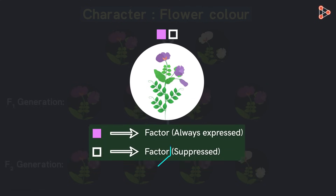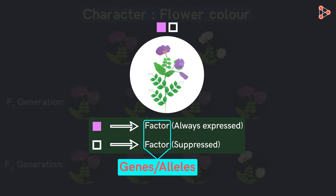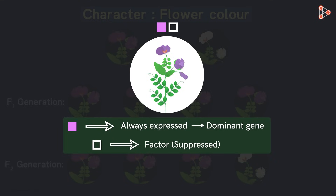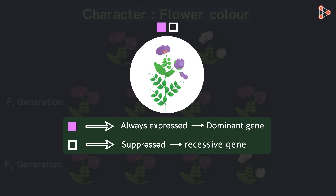We call these factors genes or alleles now. We will have a detailed look at what genes mean in our upcoming parts, but for now let's focus on Mendel's work. In today's terms, Mendel said that some genes are always expressed irrespective of the other. These are called dominant genes.